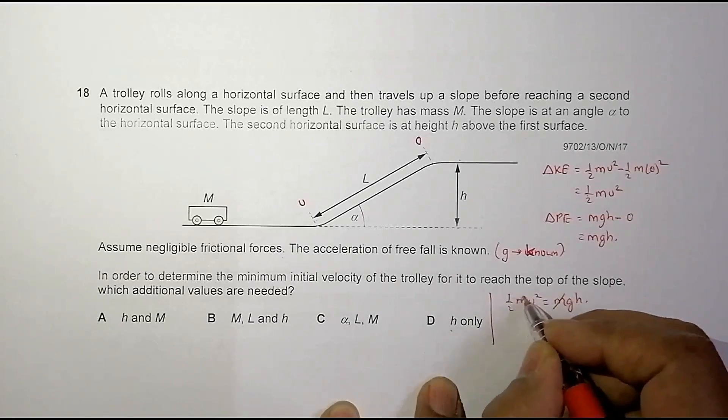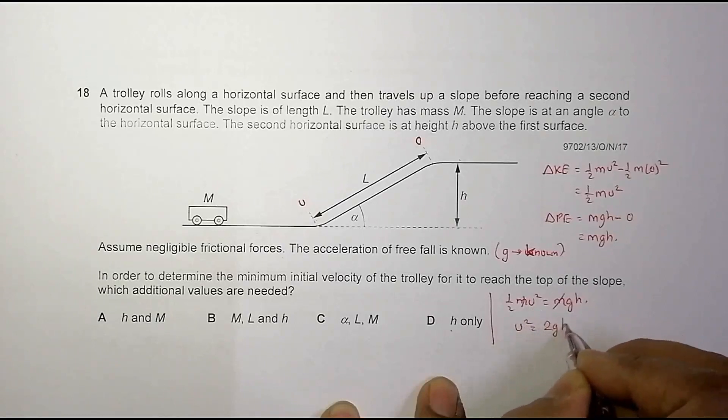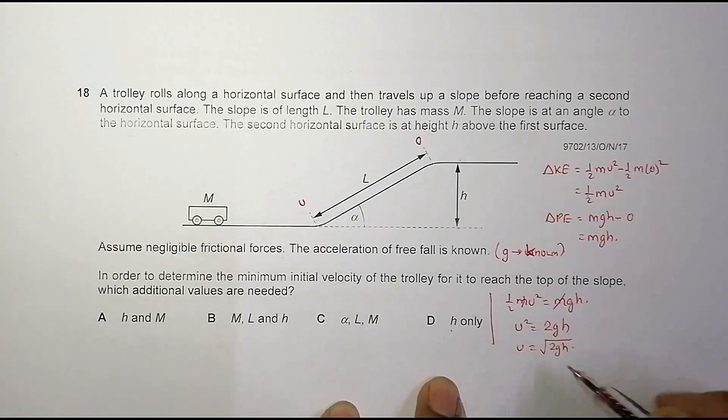M cancels out. Now we need the value of U. So U squared equals 2GH and U equals root of 2GH. G is given. What we need to find is the value of H.